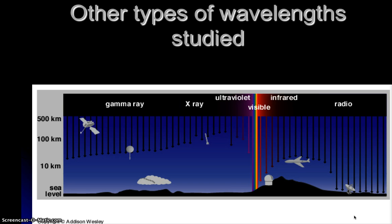So far we've really been focusing on optical telescopes — telescopes we use to view the visible part of the spectrum, the part we can see with our naked eye. But remember when you learned about light, there are many different types of light going from gamma rays to radio waves.